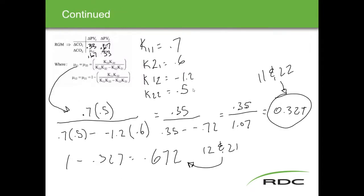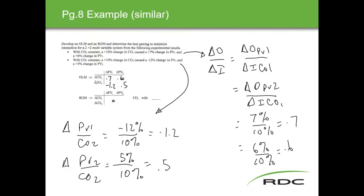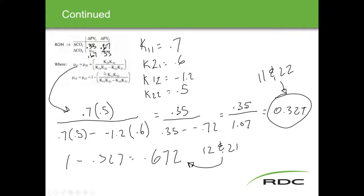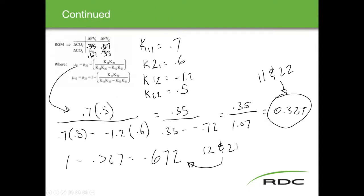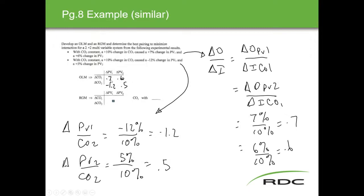Continuing, we end up getting a relative gain matrix — it looks similar to an open loop matrix. In order to find the new values, you simply use the formulas and numbers you've calculated previously. This k11 is the same k11 that gets plugged into the relative gain formula. There's nothing really new — you find these numbers and use them in predetermined formulas from your formula book, and you'll get the proper answer.